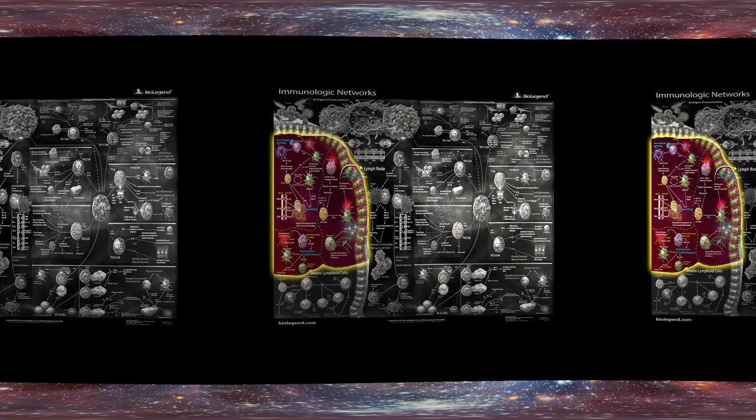Bacteria carry a number of conserved features, like flagella and LPS, that are detected by TLRs, Nod-like receptors, and C-type lectin receptors on macrophages and dendritic cells. Both of these immune cells can respond by releasing cytokines to induce inflammation. Neutrophils are also capable of releasing a NET, or neutrophil extracellular trap, which is composed of the neutrophil's DNA and extracellular fibers. The rupture and release of this net causes a unique form of cell death in the neutrophil, also known as netosis.